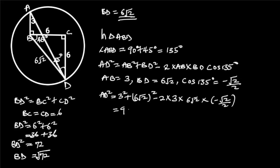3 squared is equal to 9. 6 root 2 squared is equal to 72. And minus 2 times 3 times 6 root 2 times minus root 2 over 2 is equal to 36. 9 plus 72 plus 36 is equal to 117. So AD squared is equal to 117. Taking the square root of both sides will give us AD is equal to 3 root 13.